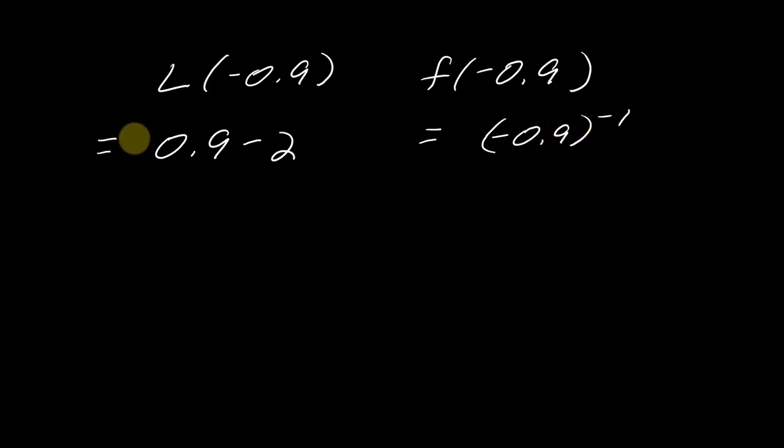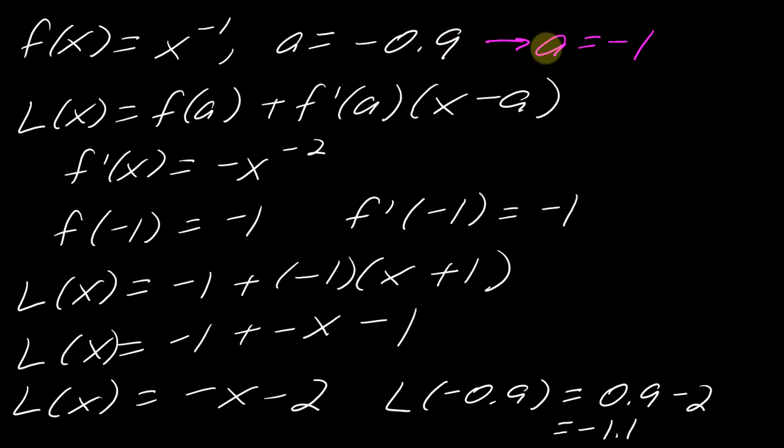And remember, this was negative x, so this negative 0.9 will become positive when I plug it in. So comparing the values of the functions, so my linearization gave me a value of negative 1.1, and the actual value is negative 1.1111 repeating. So the linearization gets you pretty close to a good approximation.